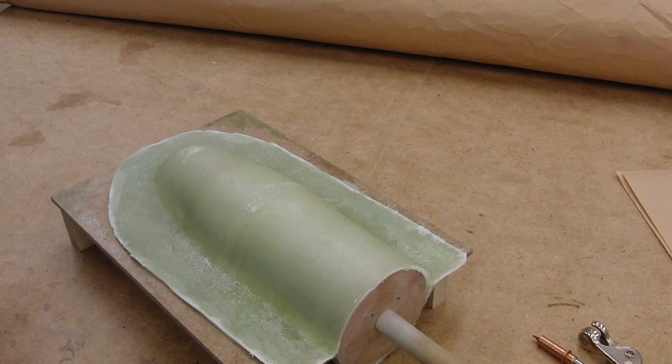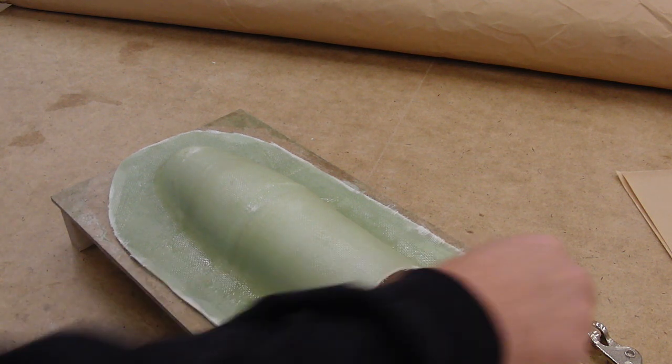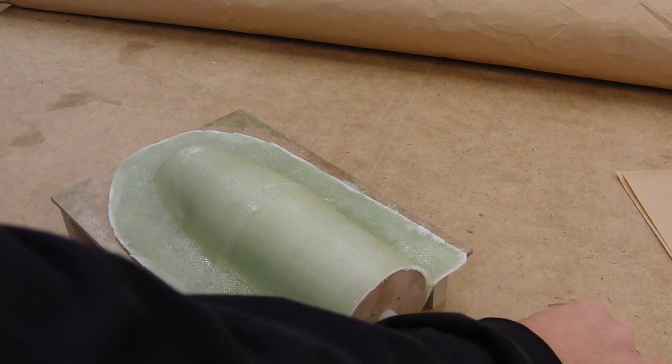One thing first is to provide some means for registering the two halves when we make the part. I like to use these little clips, but to do them, you need to drill one-eighth holes.